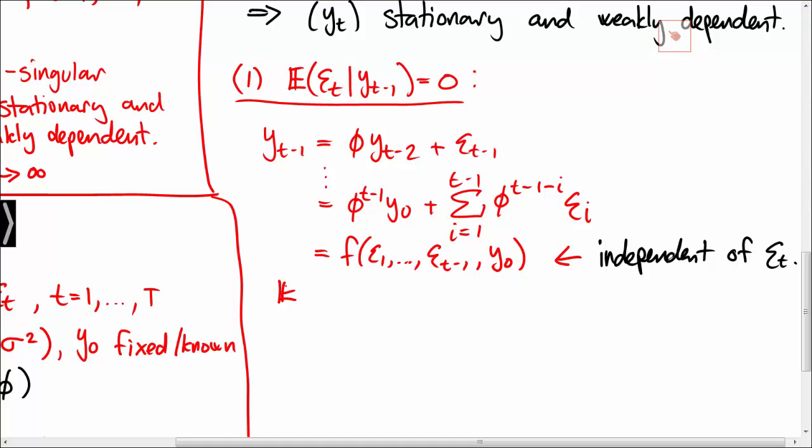Hence, the conditional expectation of epsilon t given yt minus 1 must be equal to the unconditional expectation of epsilon t as epsilon t is independent of yt minus 1. We know that epsilon t has mean zero, so indeed yt minus 1 is predetermined.